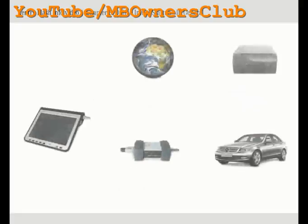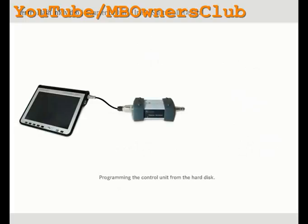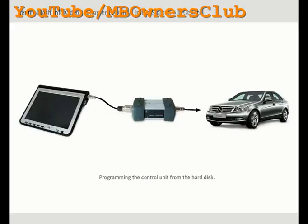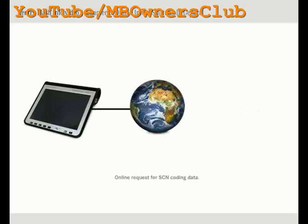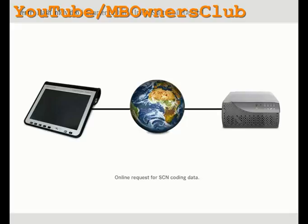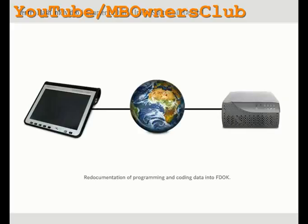The Star Diagnosis device gets the latest vehicle data from FDoc via the internet connection. If the subsequent test indicates that the control unit has to be reprogrammed, this is performed with the data from the Star Diagnosis system's hard disk. If the control unit is also SCN codable, the SCN coding data are automatically requested after the online programming has been completed, and then the control unit coding is concluded. Finally, all changes made to the vehicle are automatically re-documented in FDoc. If the control unit needed CVN re-documentation, the CVN calculated by the control unit would be re-documented automatically in FDoc as well.